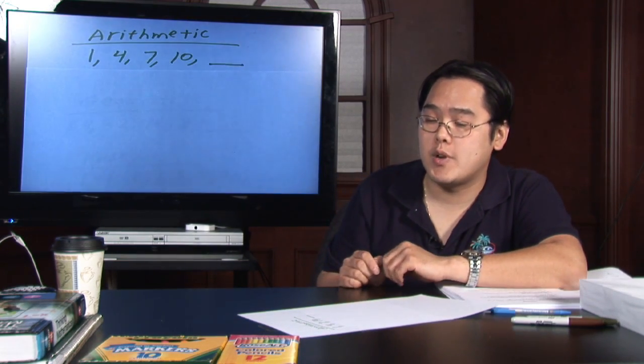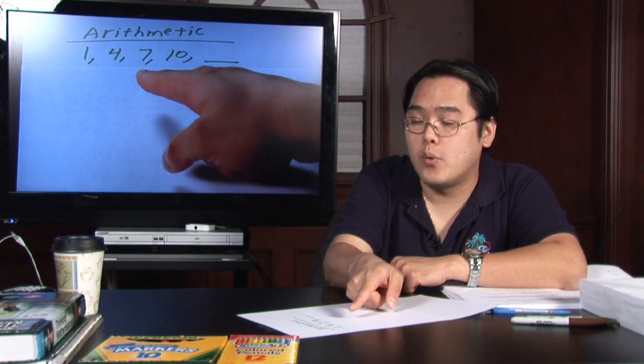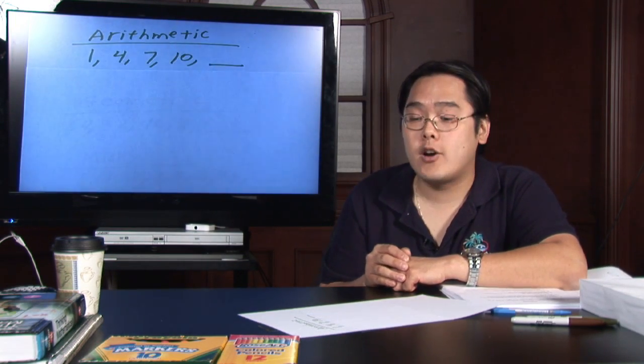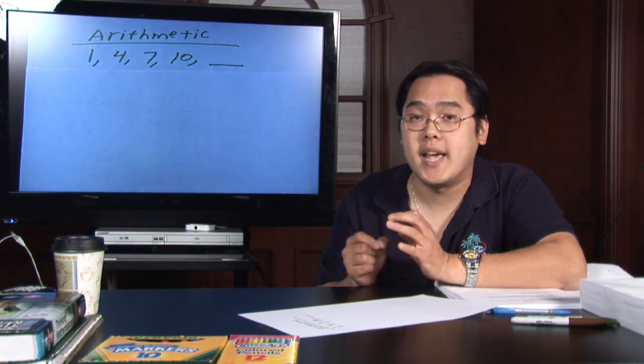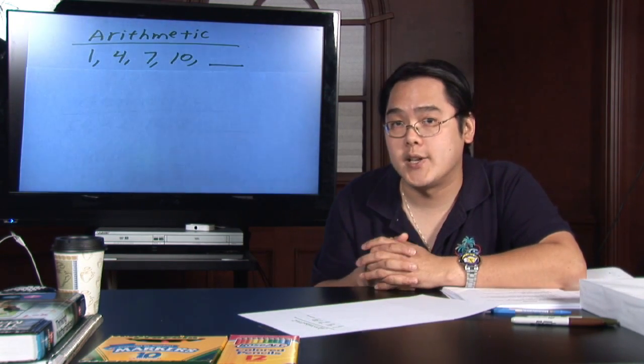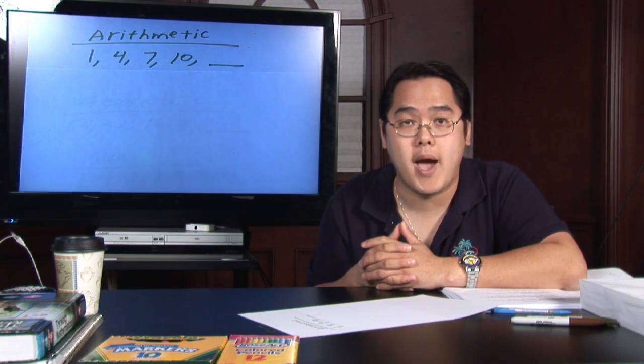So if you look at these first few numbers here, 1, 4, 7, and 10, I think you'll be able to figure out that the pattern here is that the numbers are being added by 3. So the next number you would most likely guess would be a 13 which is what the pattern happens to be.